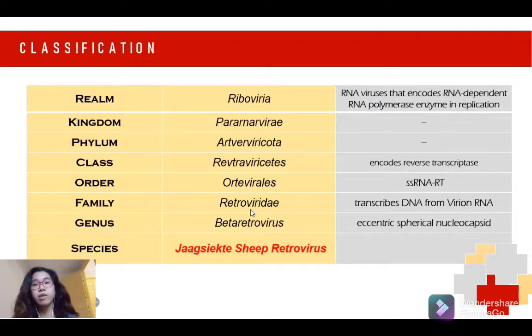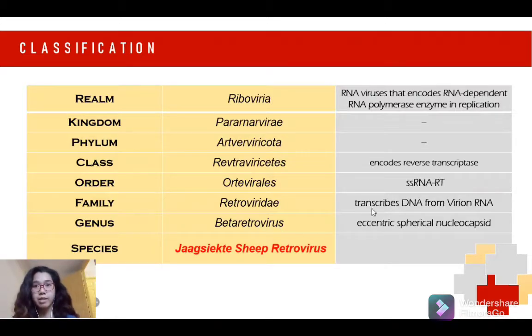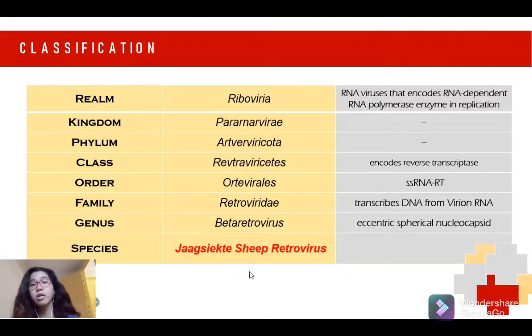Family is Retroviridae, meaning transcription is in a reverse pattern. For genus, it is Betaretrovirus, characterized by having an eccentric spherical nucleocapsid. And this species, once again, is the Jaagsiekte sheep retrovirus.